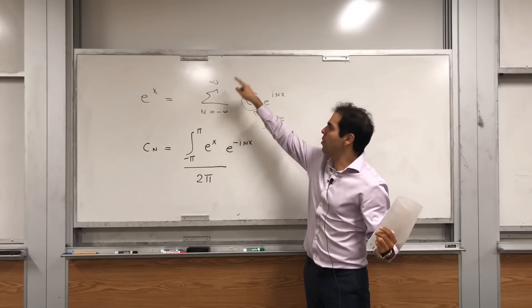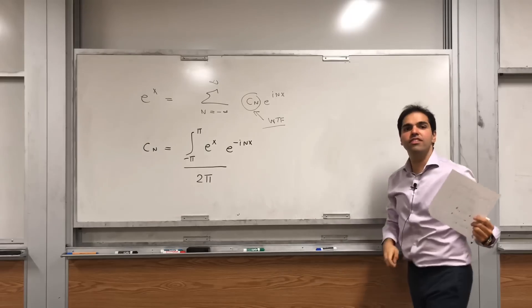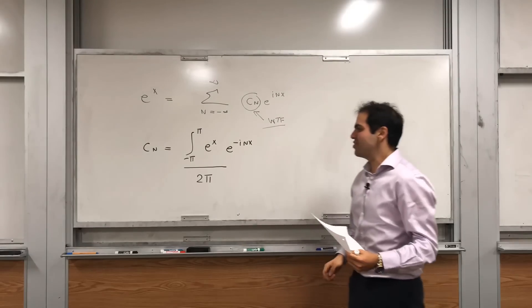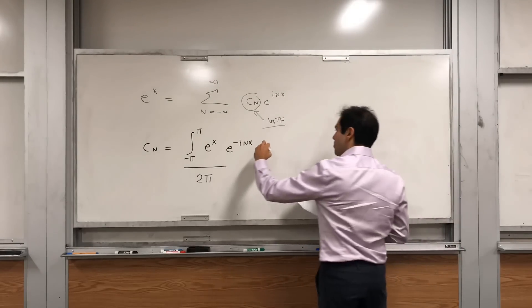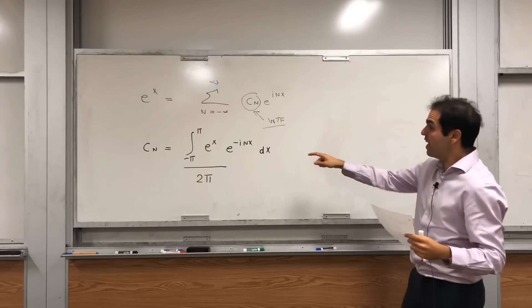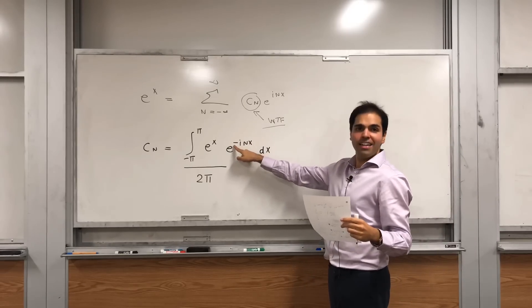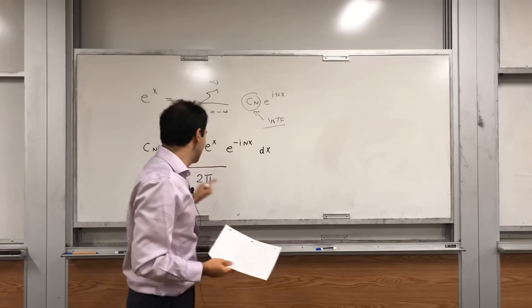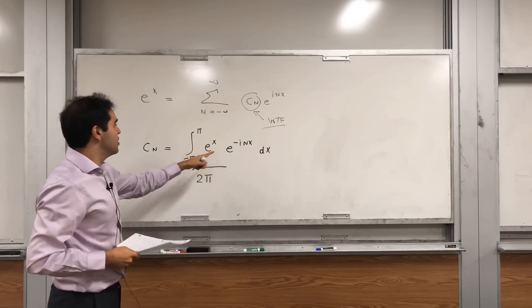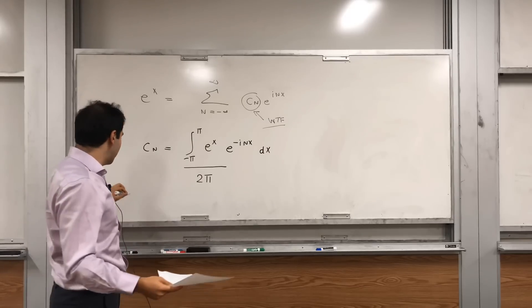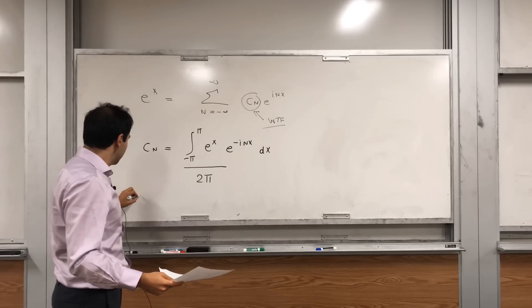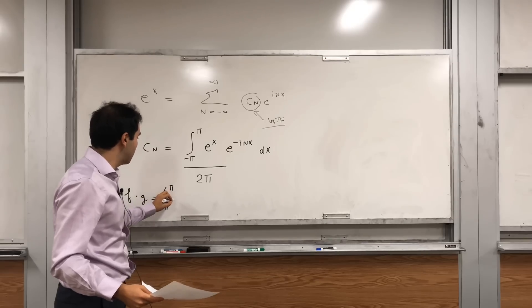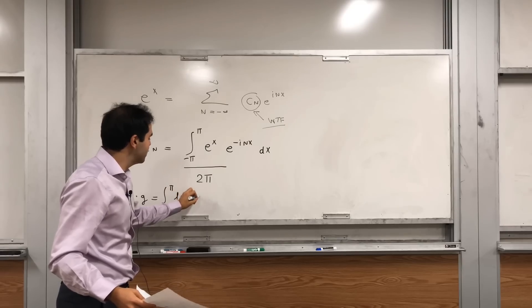Why 2 pi? Because here we have a double sum — it goes from minus infinity to infinity — so some terms are counted twice, that's why you put a 2. And why the minus sign? For complex valued functions, you define the inner product f dot g to be the integral from minus pi to pi of f of x times g-bar of x dx.